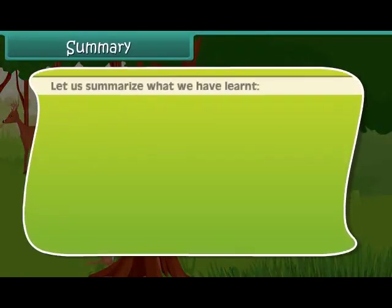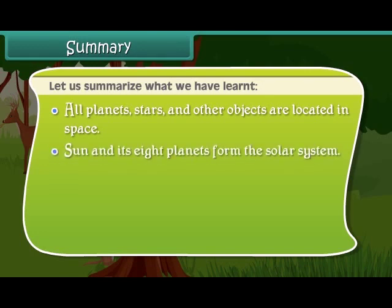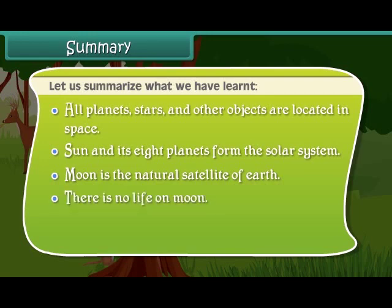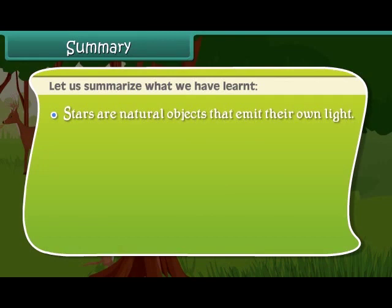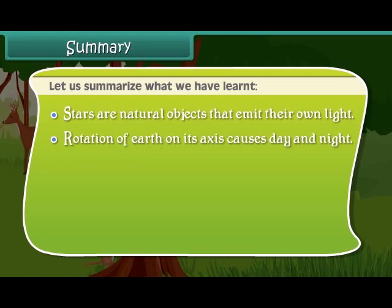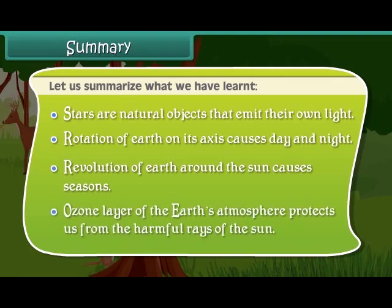Let us summarize what we have learned. All planets, stars and other objects are located in space. The Sun and its eight planets form the solar system. Moon is the natural satellite of Earth, and there is no life on the Moon. Neil Armstrong was the first man to land on the Moon. Stars are natural objects that emit their own light. The rotation of Earth on its axis causes day and night. The revolution of Earth around the Sun causes seasons. The ozone layer of Earth's atmosphere protects us from the harmful rays of the Sun.